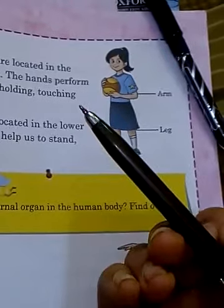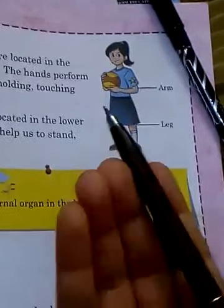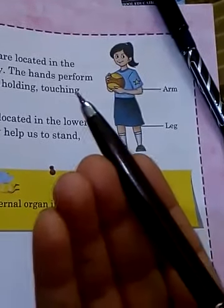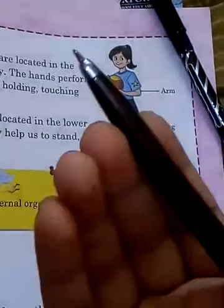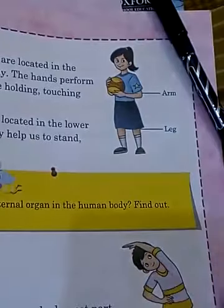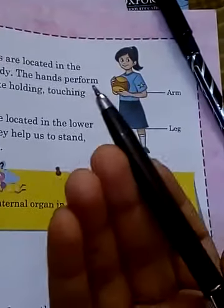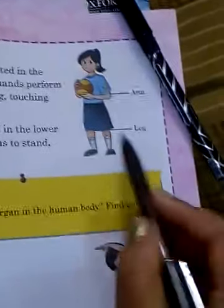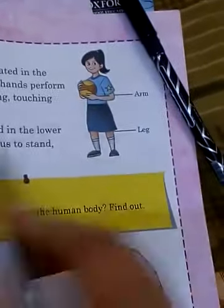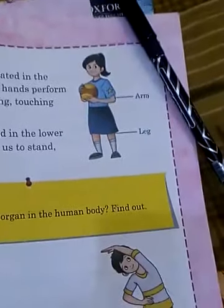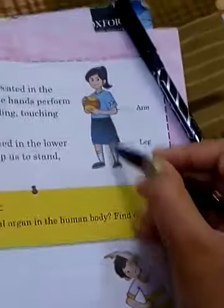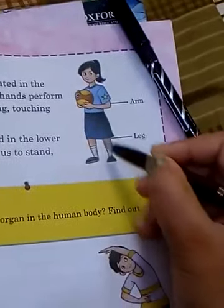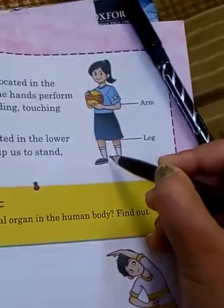We use our hands for various activities like eating, writing, painting, washing, bathing, playing, etc. Another point is the legs — the legs and feet are located in the lower part of our body.